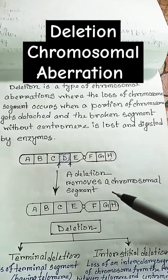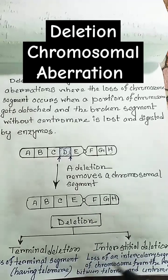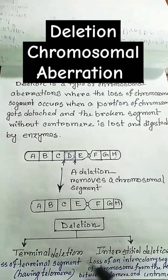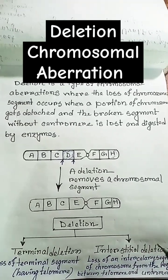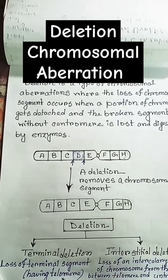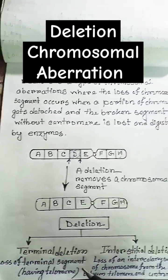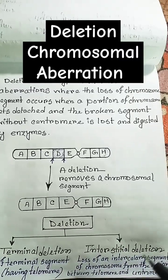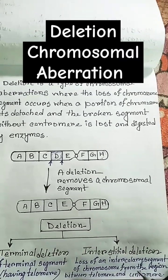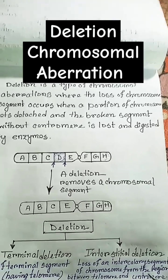Here, a deletion removes a chromosomal segment D. Deletion is divided into two categories: terminal deletion and interstitial deletion. In terminal deletion, loss of the terminal segment having a telomere occurs. But in interstitial deletion, loss of an intercalary segment of the chromosome from the region between the telomere and centromere occurs.